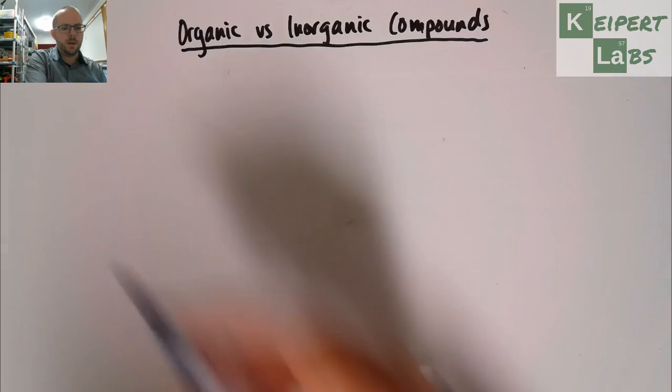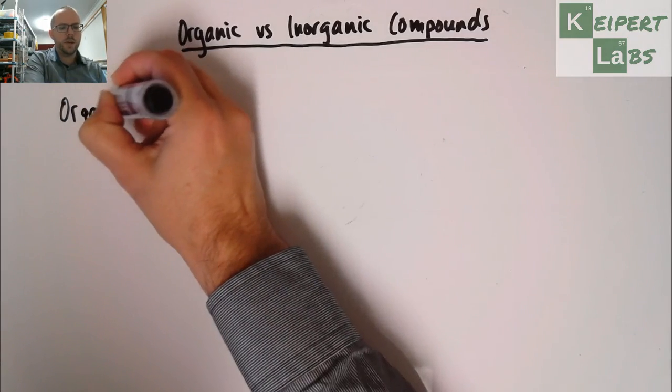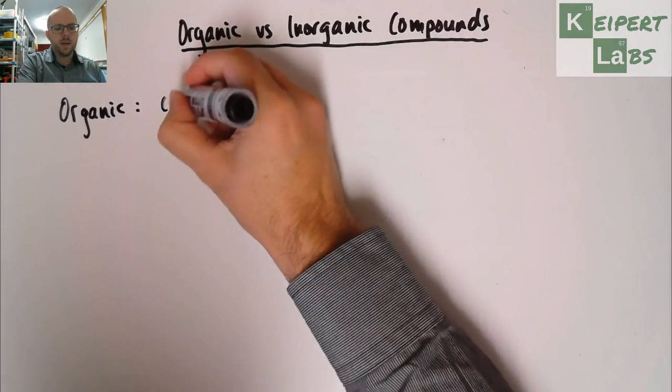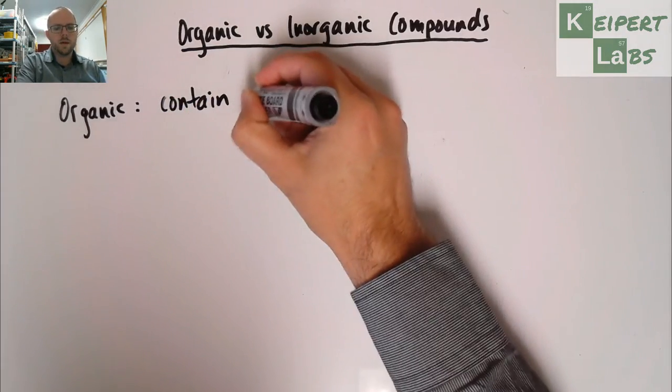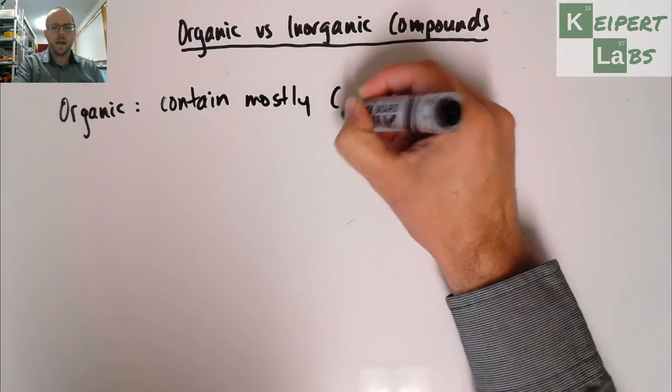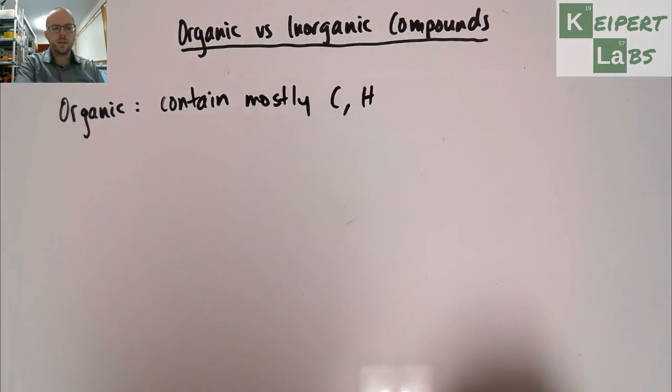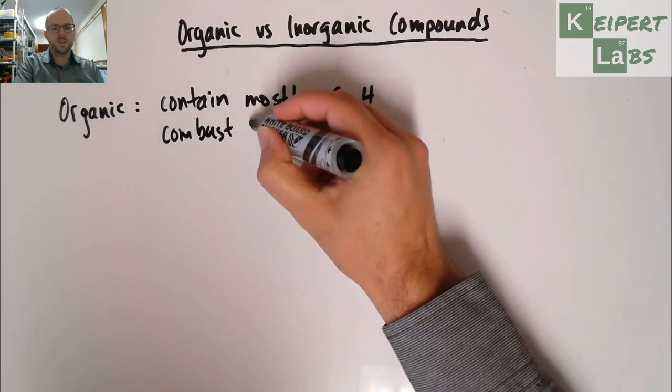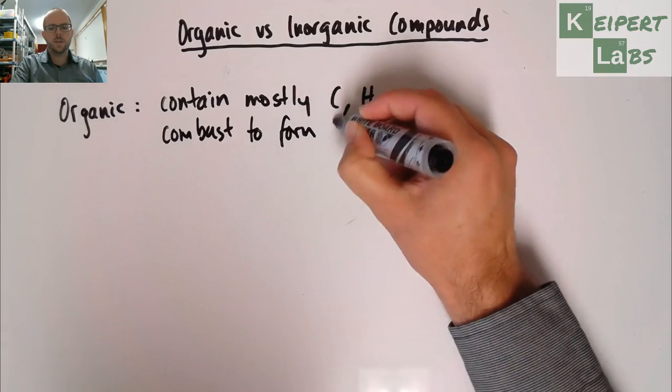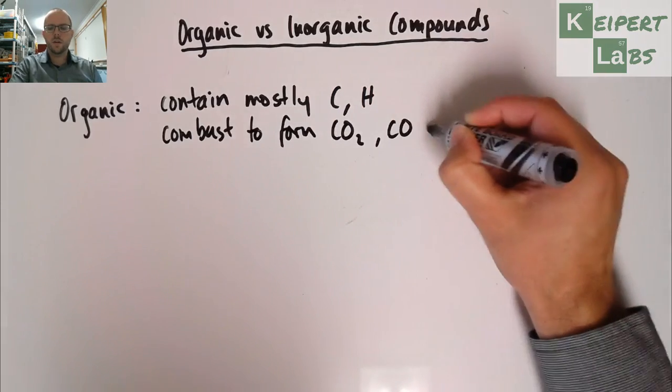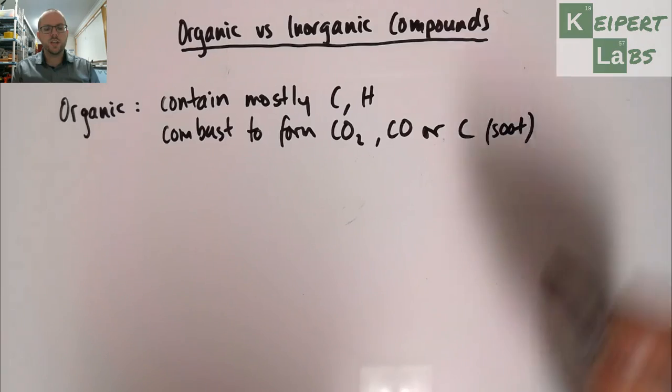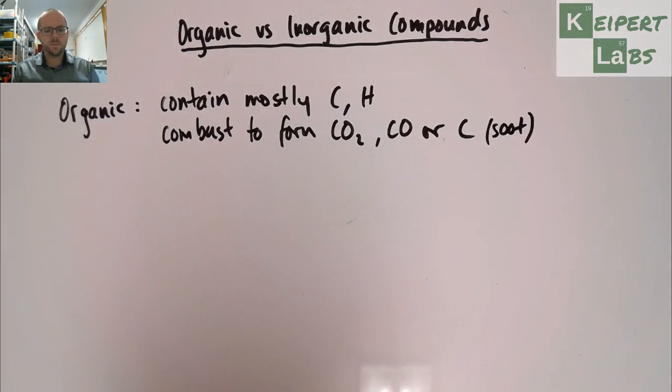Let's kick off first by thinking about substances we define as organic. Substances that are organic contain primarily or mostly carbon and hydrogen. They also combust or burn in the presence of air to form, depending on how much oxygen is present, carbon dioxide, carbon monoxide, or carbon as soot. We've looked at combustion equations before.